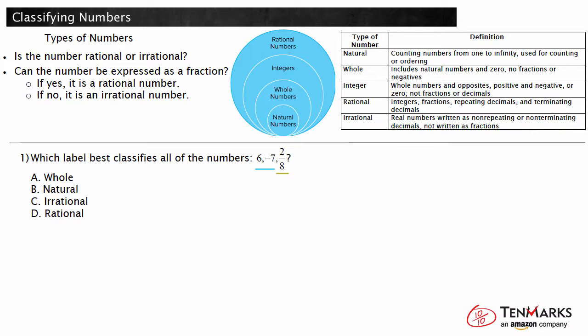So we know that all the numbers are rational numbers. The number cannot be irrational if it is rational, so cross out choice C. We can circle choice D because we know the numbers are rational. Whole numbers and natural numbers are both positive numbers, not fractions, so neither of those answers are correct. These numbers are all rational numbers.